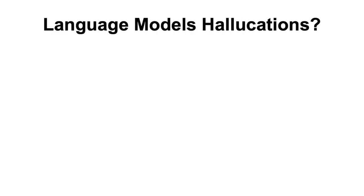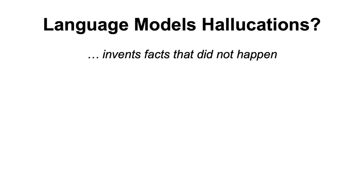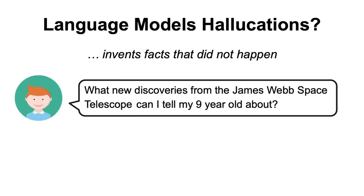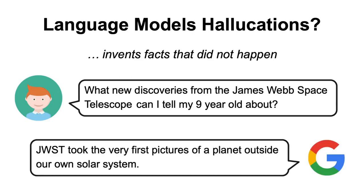First of all, what exactly do we mean when we say that a model hallucinates? Well, the most widely known definition nowadays is the one where the language model invents facts that did not happen. For instance, during their demo in February 2023, when Google AI chatbot Bard was asked about what new discoveries from the James Webb Space Telescope can I tell my 9-year-old about, it hallucinated by saying, among others, that the JWST took the very first picture of a planet outside our solar system.